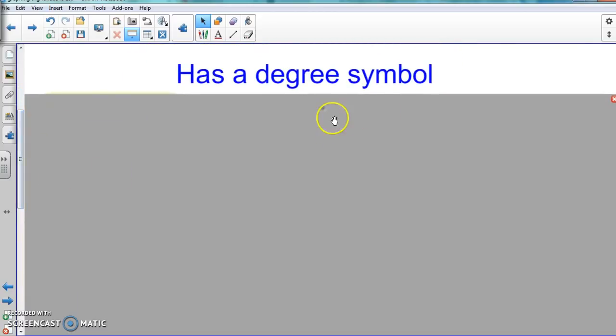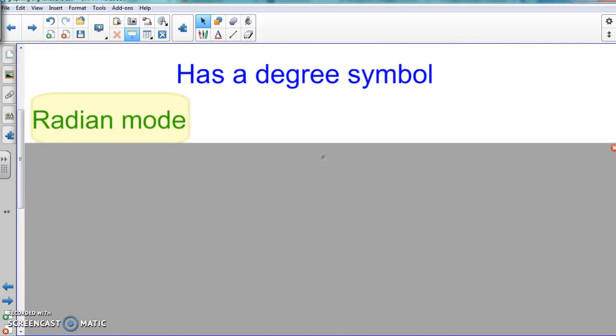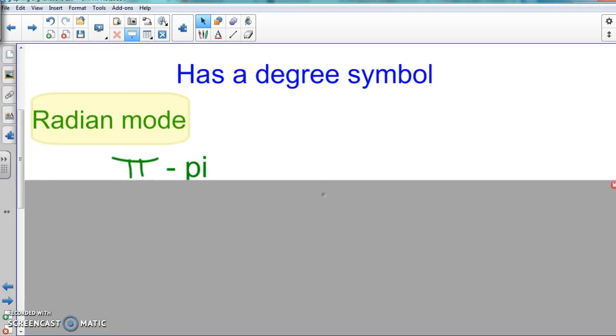So let's move down to the other mode, which is radian. Now, 9 times out of 10, when it comes to radian mode, you're going to have this symbol here, which is pi.